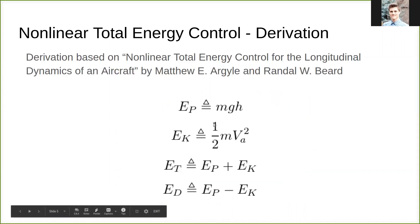So we're going to go into the derivation a little bit. Before I do, I must give credit to Matthew Argyle and Randy Beard, whose work of nonlinear total energy control for longitudinal dynamics of an aircraft all of this is based off of. The beginning of this derivation begins with definitions for energy types. We have our potential energy E_P which is defined as mass times gravity times altitude, your kinetic energy E_K which is one half m V_a squared where V_a is your airspeed velocity. Then you have your total energy state E_T which is the sum of both your potential and kinetic energy, and your difference energy state E_D which is the difference of those two.